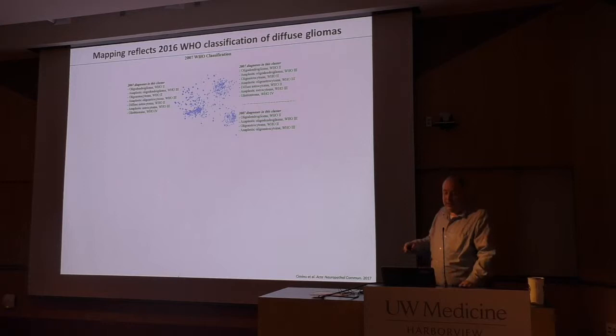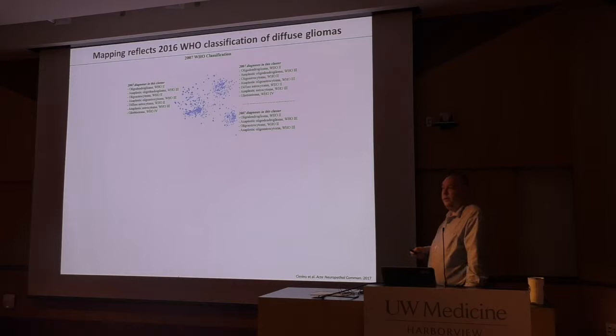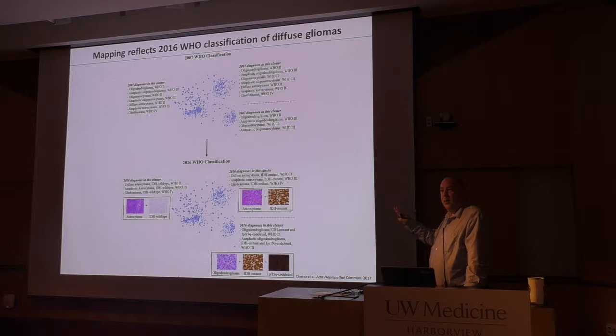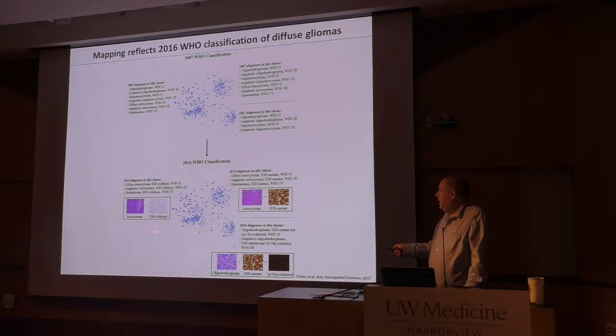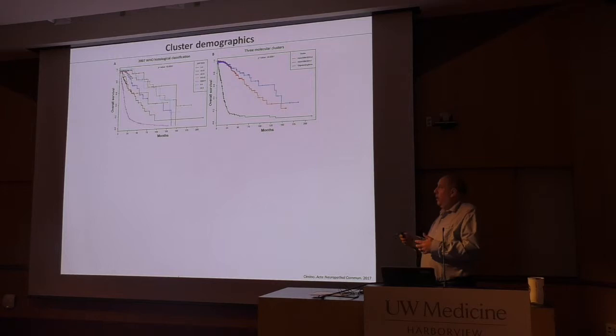Taking the 2007 classification, you get a whole lot of diagnoses in each cluster — not very helpful. But with the 2016 classification we get three major subgroups: astrocytoma grade 2 through glioblastoma IDH wild-type, IDH mutant astrocytoma, and IDH mutant 1p/19q co-deleted oligodendrogliomas.